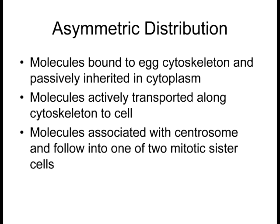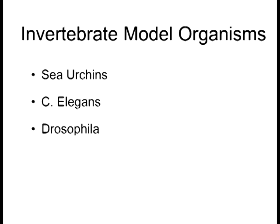Oocytes are not universal in how these molecules are distributed, and things start shifting around even before the first mitotic event. The three model organisms we're going to study today are all invertebrate model organisms. The first one is the sea urchin, commonly used mainly for fertilization and cleavage — the fertilization process as well as the initial cleavage processes that occur in development.